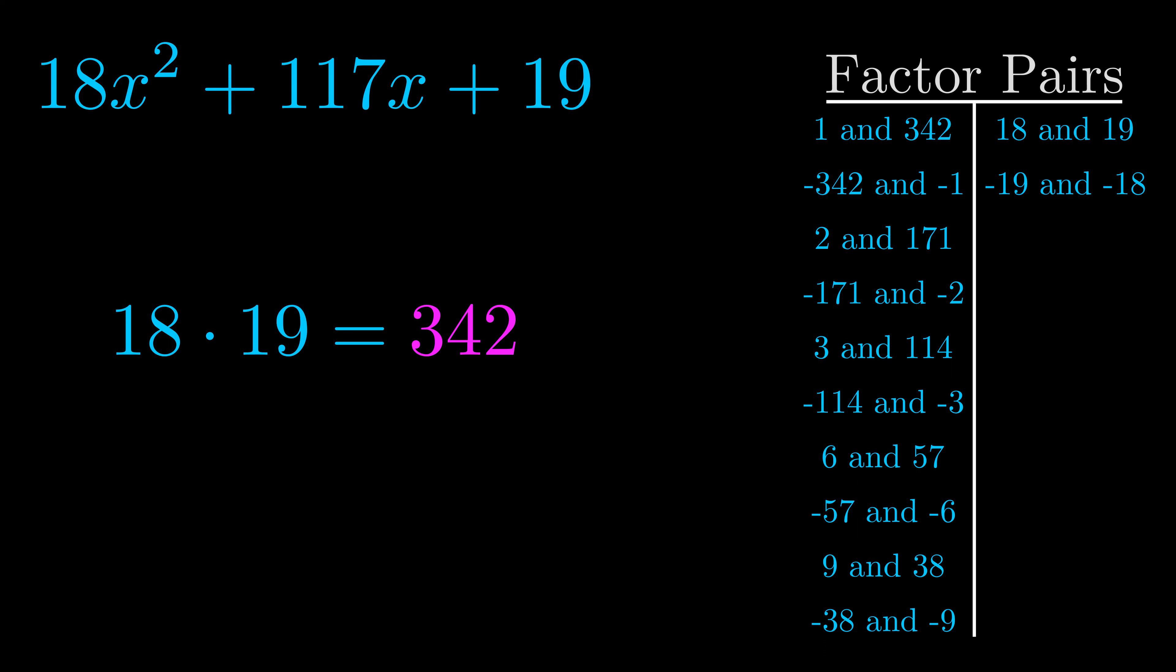The b value is the coefficient on the x term. That's the middle term, the one that we haven't done anything with yet. And really this is the only factor pair that we need.